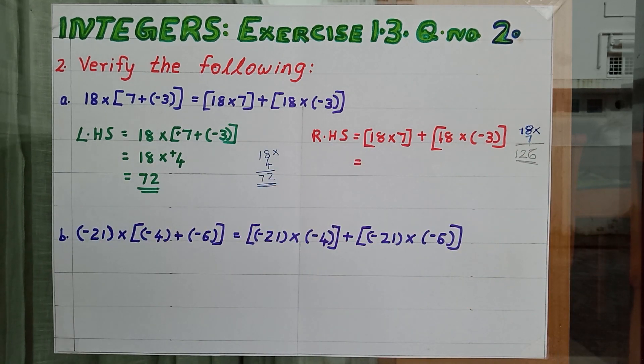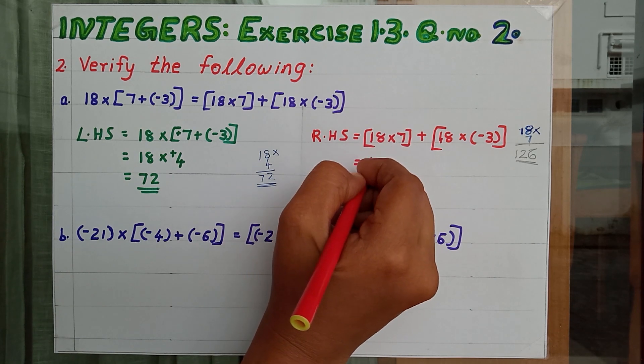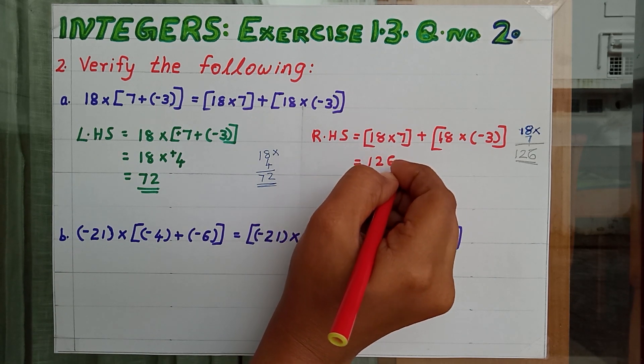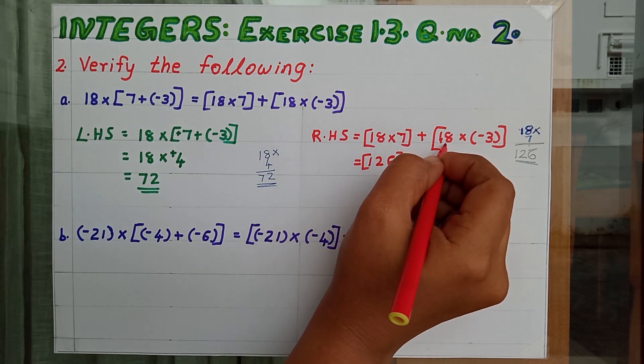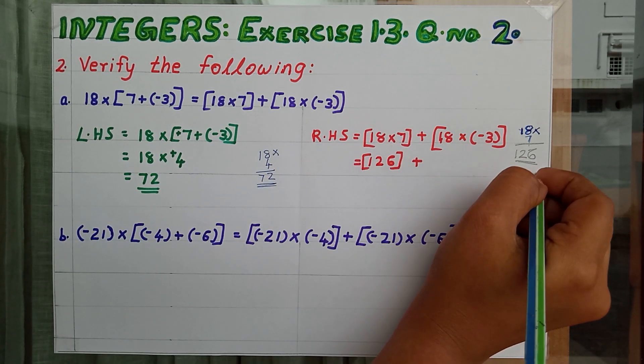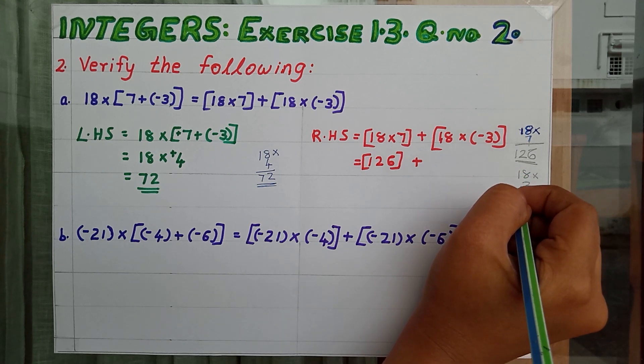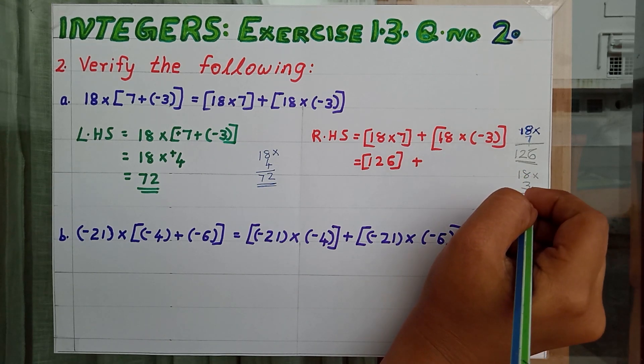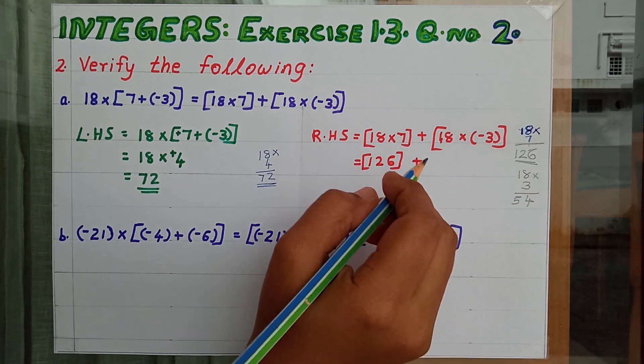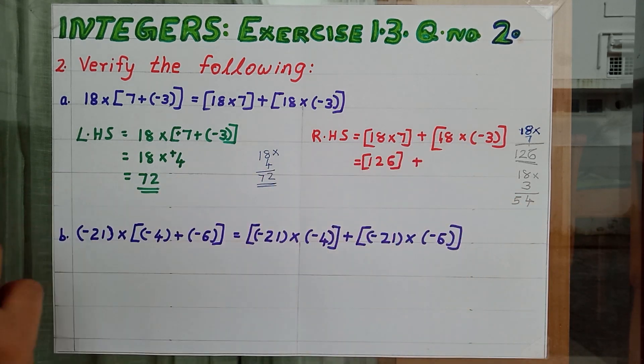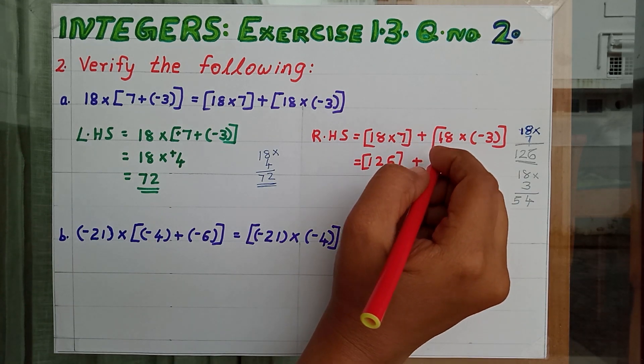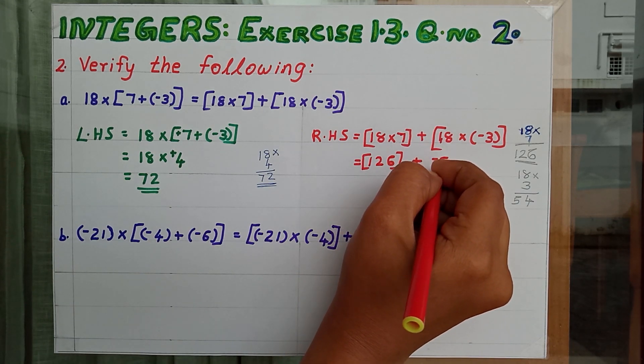Plus 18 into minus 3. 18 into 7 equal to 126. So here I can write down 126 plus 18 into minus 3. 18 into 54. Plus into minus. What is the answer? Minus. So answer is minus 54.